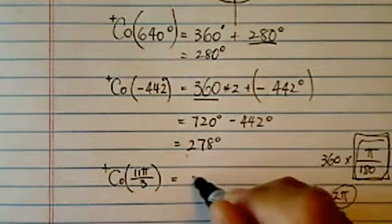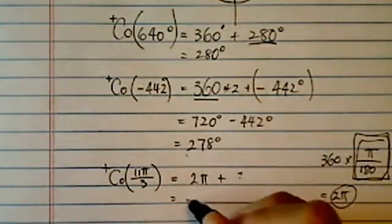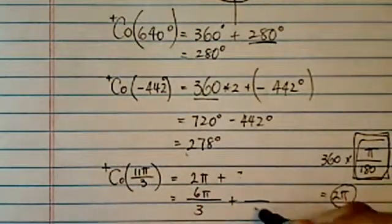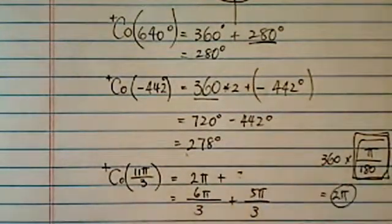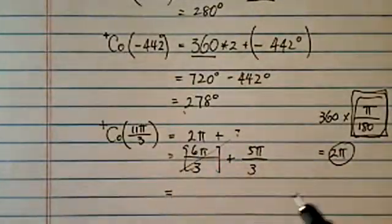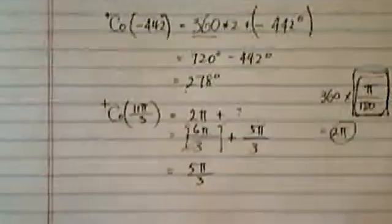So here, what we're going to do is 2 pi plus question mark. Basically, we have 6 pi. We're going to break down 11 pi over 5. That's 3 and 5. And guess what? Trim the fat. Our coterminal is 5 pi over 3.